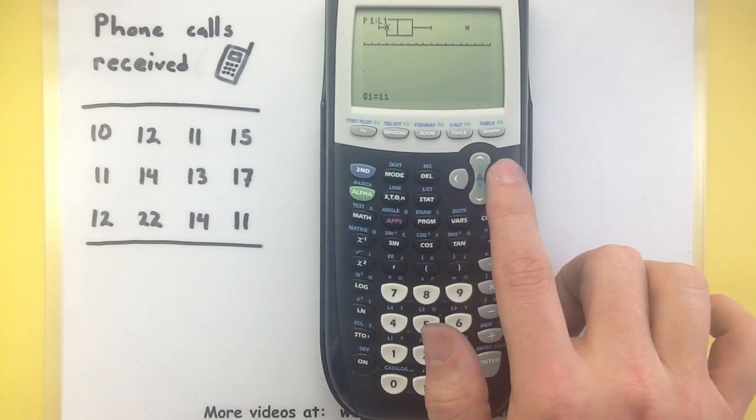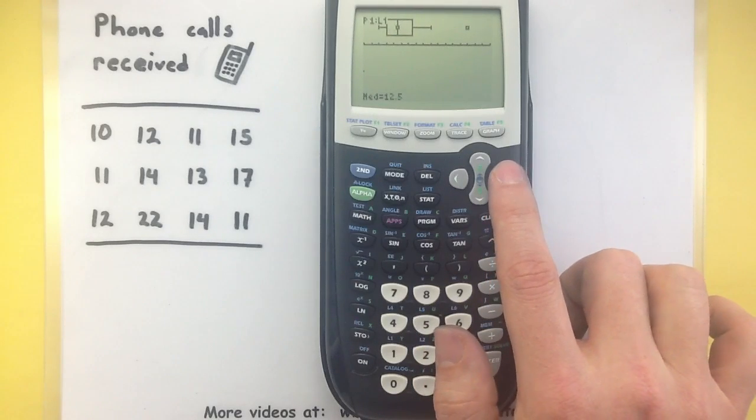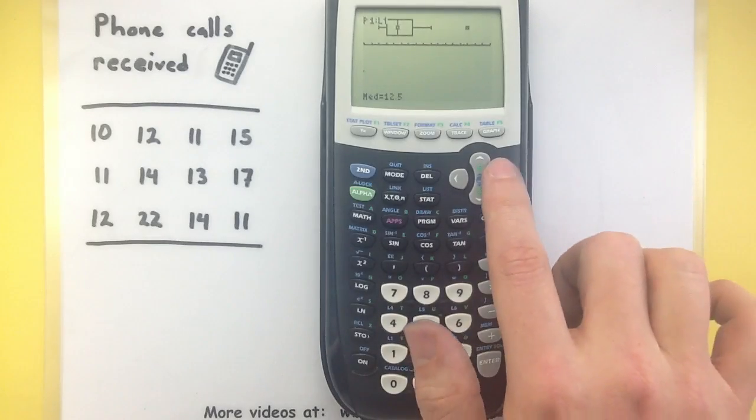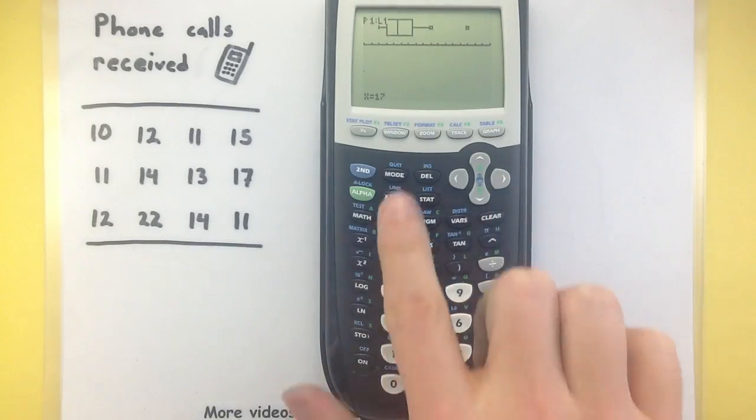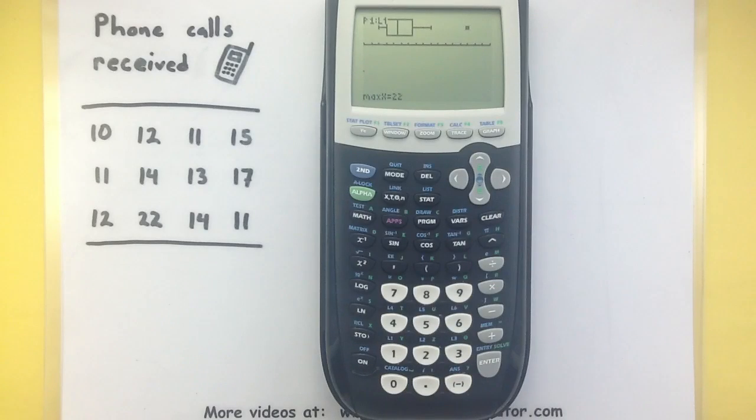So Q1 is 11, my median is 12.5, that would be like Q2, Q3 is 14.5, my high value is 17, and sure enough there is my outlier or my maximum value at 22.